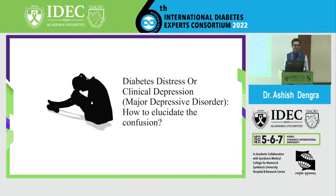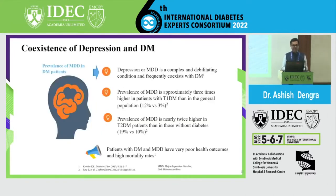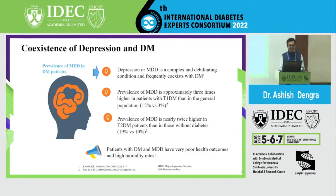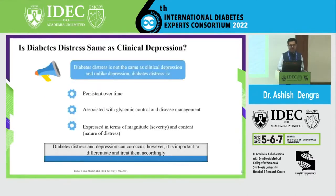Diabetes distress is often confused with depression in our day-to-day clinic. Major depressive disorder is a complex and debilitating condition which frequently coexists with diabetes. In type 1 diabetes it is nearly 12% and in type 2 it is 19%. Patients with diabetes and major depressive disorder have ultimately poor health outcomes and high morbidity.